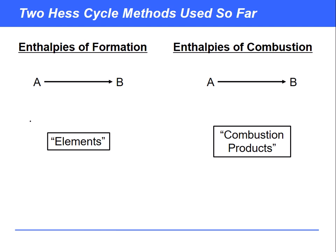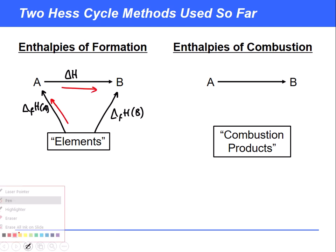We've either used enthalpies of formation, where our cycles have been completed by using the elements. The enthalpy of formation of A would be here and the enthalpy of formation of B would be here, and we would use those to work out our unknown enthalpy change. We've considered how we have two routes between the elements and B - you can either go along the red arrows (the indirect route) or along the blue arrow, which is the direct route from the elements to B.